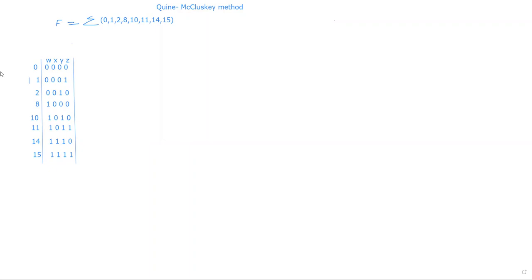In this video, we are going to study the Quine-McCluskey method, otherwise called the prime implicant method or tabulation method. Already we have seen reduction of equations using Boolean algebra and Boolean laws. The next method we have seen is the Karnaugh map — how we can reduce the equation using the K-map. The next method is the Quine-McCluskey method.